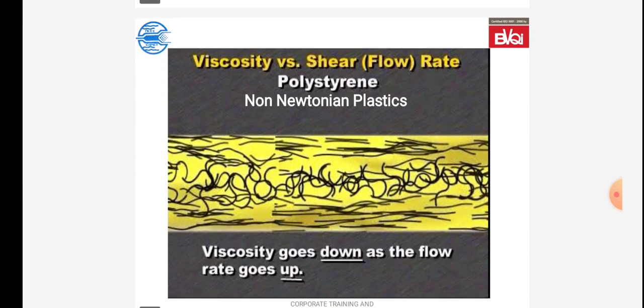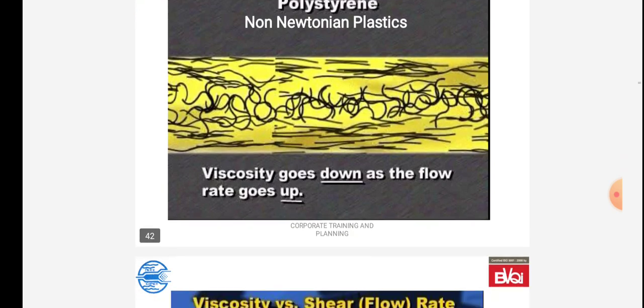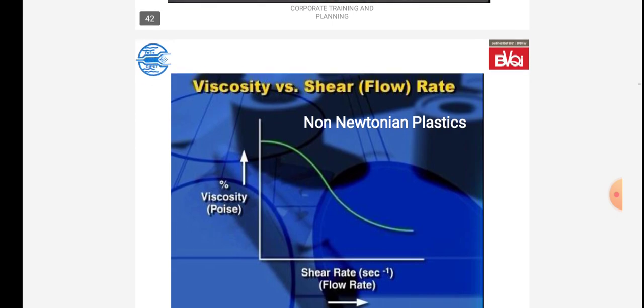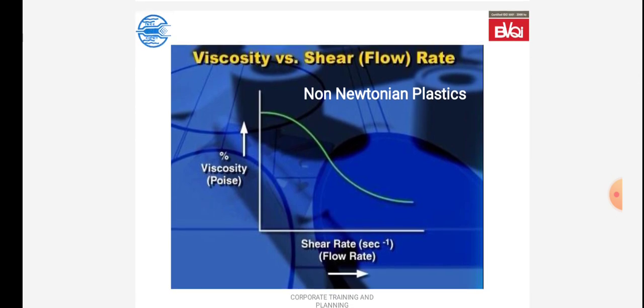Viscosity versus shear flow rate for polystyrene — non-Newtonian plastics: viscosity goes down as the flow rate goes up. This is the curve of viscosity in terms of poise versus shear rate in terms of per second flow rate.